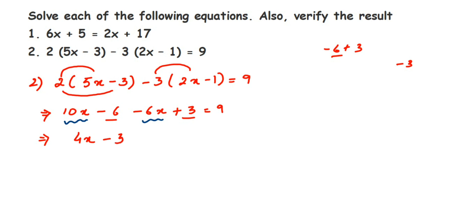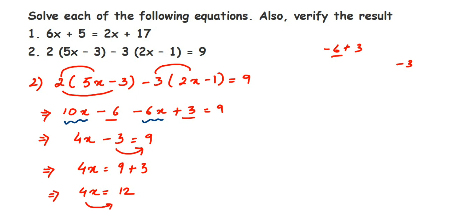Now transpose minus 3 to the other side. Its sign changes from negative to positive: 9 + 3 = 12. So 4x = 12. Transpose 4 to the other side — it goes from multiplication to division: x = 12 divided by 4. Cancelling: 4 threes are 12, so therefore x is equal to 3.